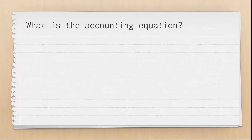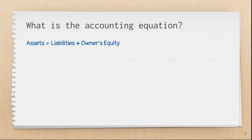So now you want to know how to balance the accounting equation? Well, slow your roll there, sport. You don't become as smart as Ms. Lowry overnight. First, we have to know what the accounting equation is. Assets equals liabilities plus owner's equity. This is the accounting equation.